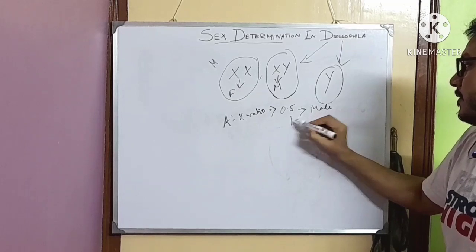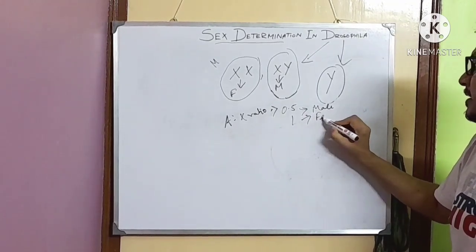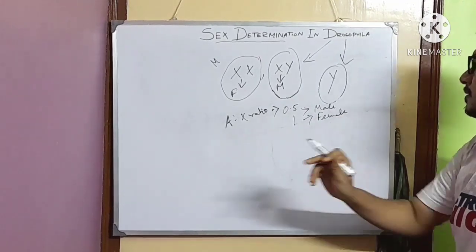If the ratio is 1, then the fly is female.